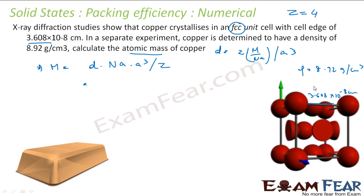Let's put the values. Density is 8.92 g/cm³. Please put the units also. Na is Avogadro's number, 6.022 × 10^23 atoms per mole.